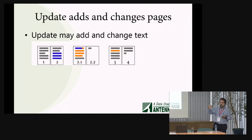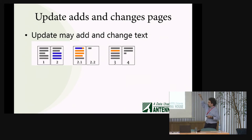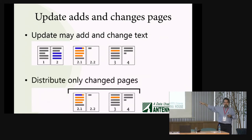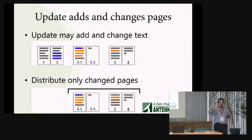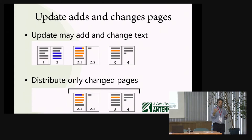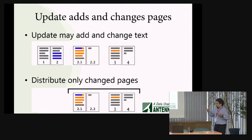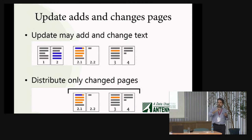So how many pages do we send out this time? We didn't change pages one and two this time around. We just send the changed pages, which is the new 2.1 and 2.2, as well as the new 3 and 4. We just send a new revision of page 2.1 rather than making it 2.1.1, because we didn't change the actual number of pages. In a real full loose leaf document, there's something called the list of effective pages at the front, which is the complete list of what revision each page should be up to in an up-to-date document.